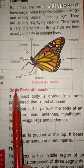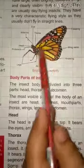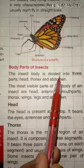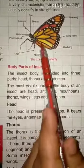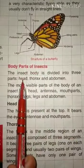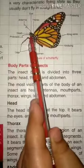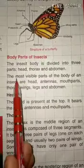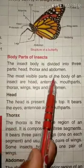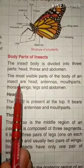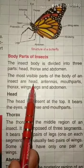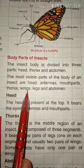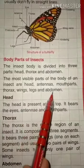Now we will know the body parts of insects. The insect body is divided into three parts. What are the three parts? Head, thorax, and abdomen. The most visible parts of the body of an insect are: head, antennae, mouth parts, thorax, wings, legs, and abdomen.